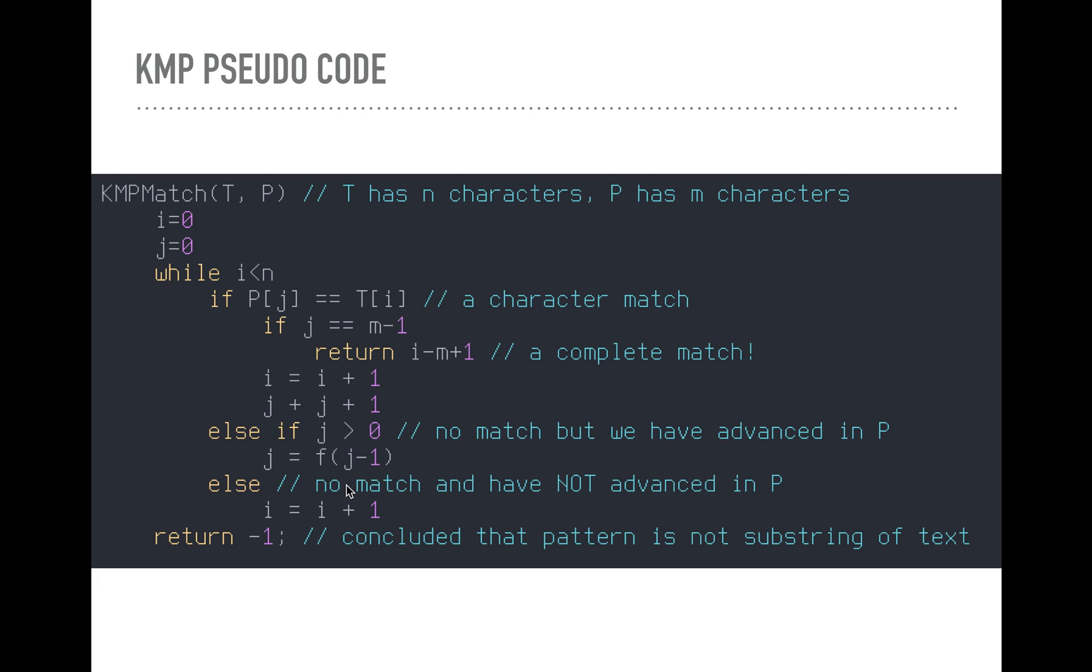Then we're going to reset our j. And then if we have no match and we have not advanced in P, then we're just going to skip ahead one. And then if by the end of this we concluded that the pattern is not a substring of the text, then we're just going to return negative one because this returns an integer.